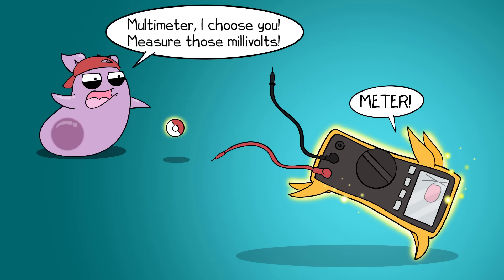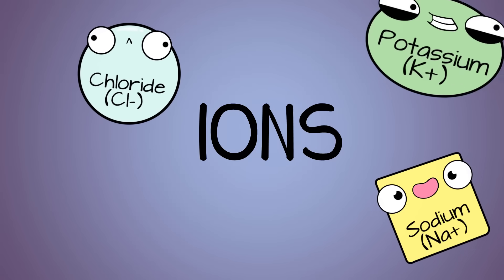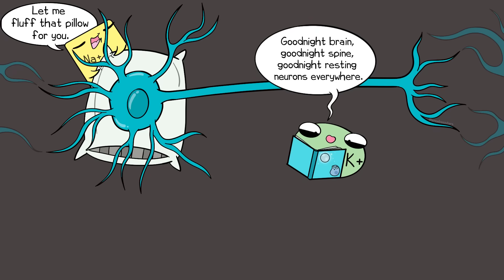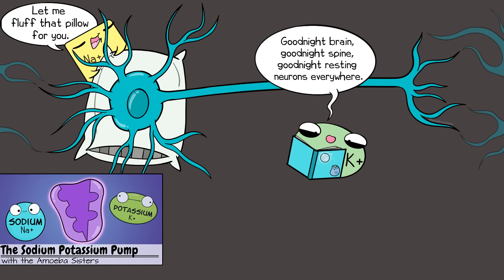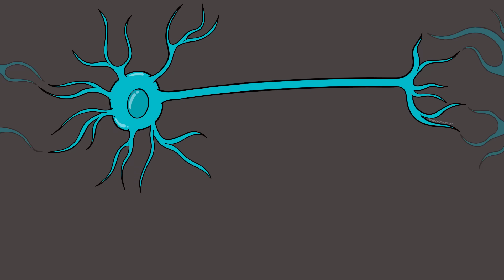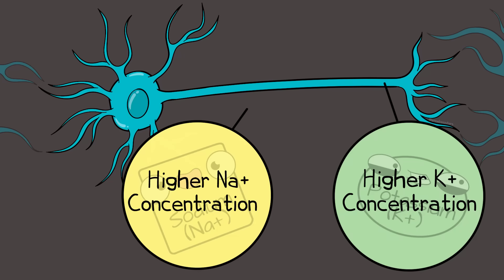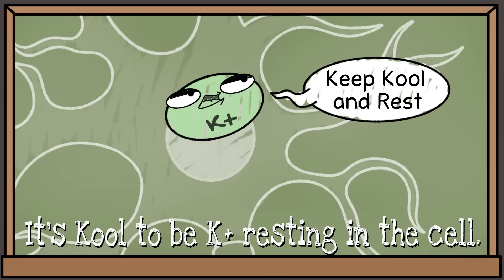Ions like chloride, sodium, potassium, and certain anions are involved. Sodium and potassium play huge roles in maintaining the resting potential — familiar from the sodium-potassium pump discussed in another video. That pump helps maintain a neuron at resting potential. At rest, sodium concentration is generally higher outside the cell, and potassium concentration is higher inside the cell. Overall at rest, the neuron is more negative inside compared to its surroundings.